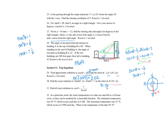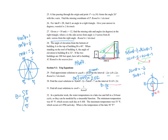Cosine is the x-coordinate on the unit circle. Cosine equals positive one half at pi over 3 and 5 pi over 3. Cosine equals negative one half at 2 pi over 3 and 4 pi over 3. So all solutions are theta equals pi over 3, 2 pi over 3, 4 pi over 3, and 5 pi over 3, each plus 2 pi K.